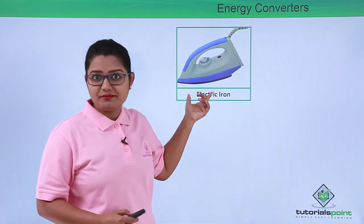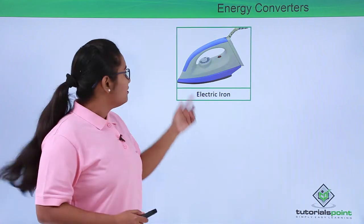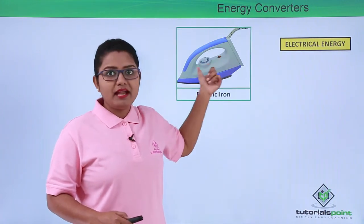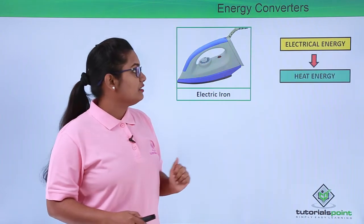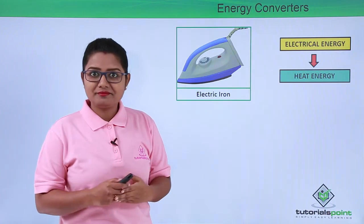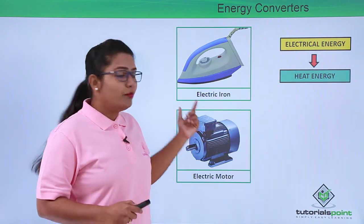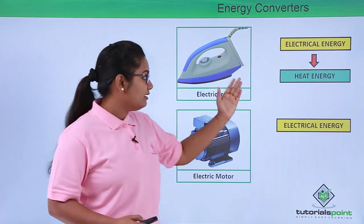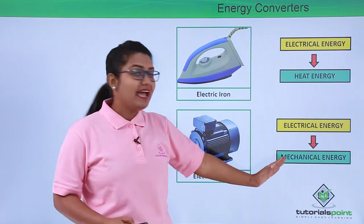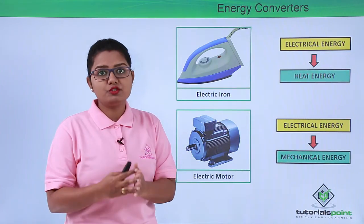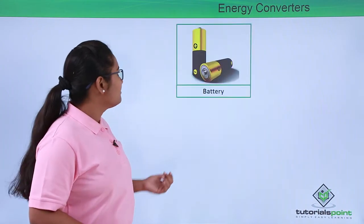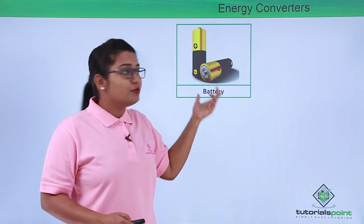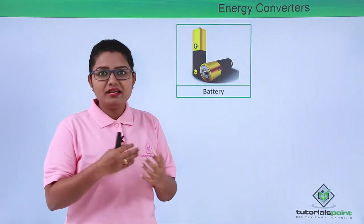Here are a few examples. First is the electric iron that we use every day — it converts electrical energy supplied to it into heat energy, which we use to press our clothes. Similarly, an electric motor, when connected to an electric supply, converts that electrical energy to mechanical energy, which is then used to perform some work.